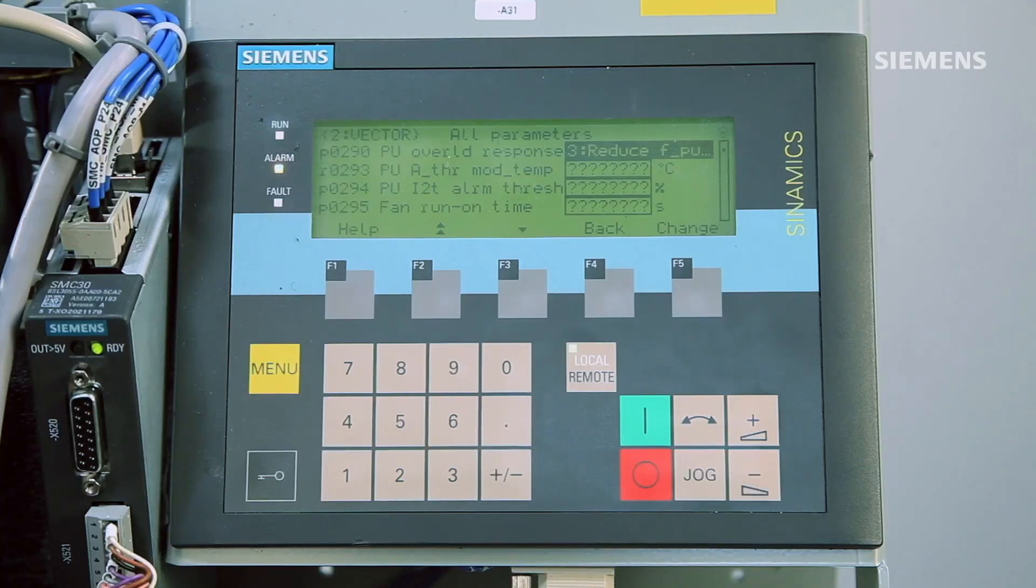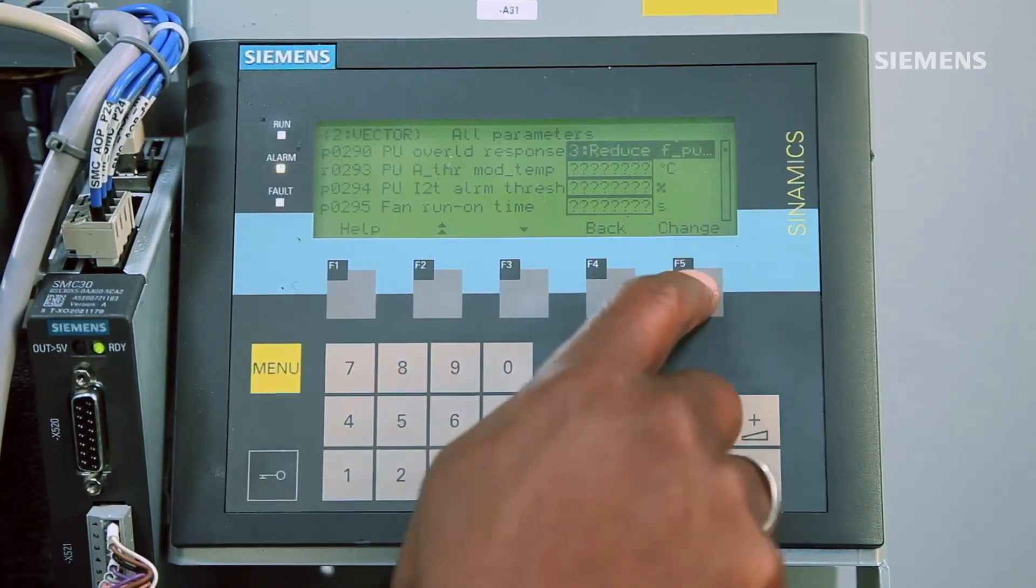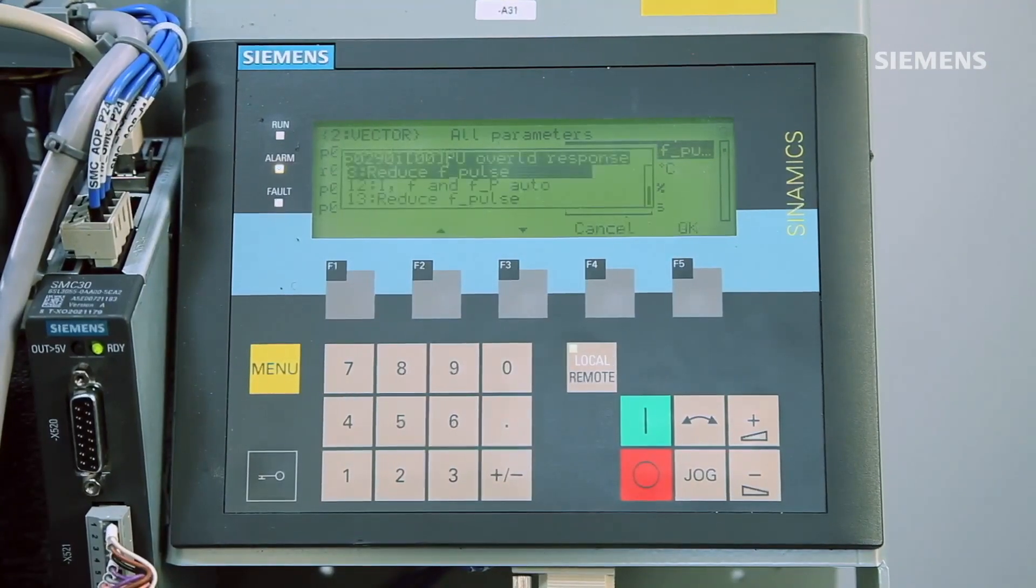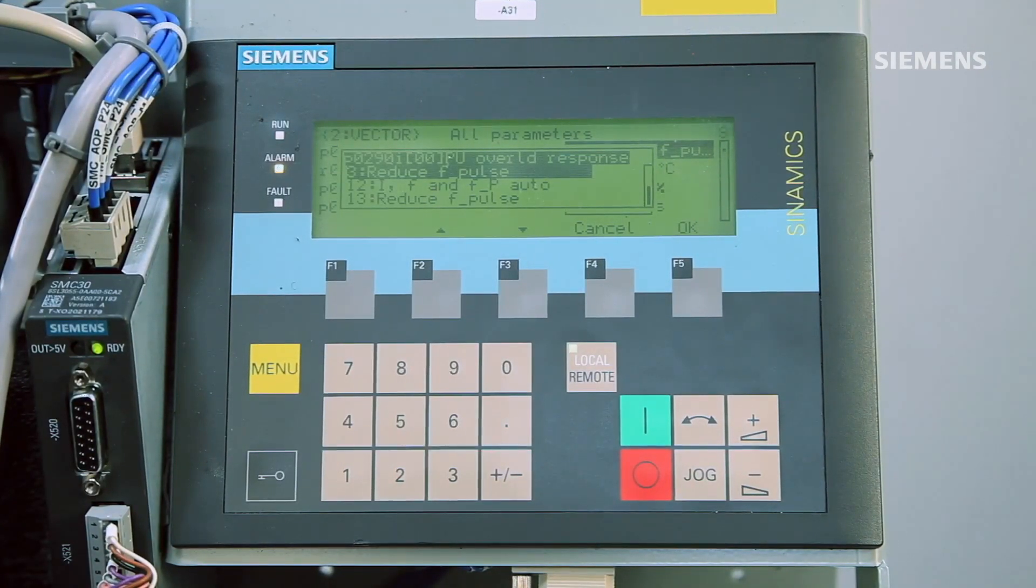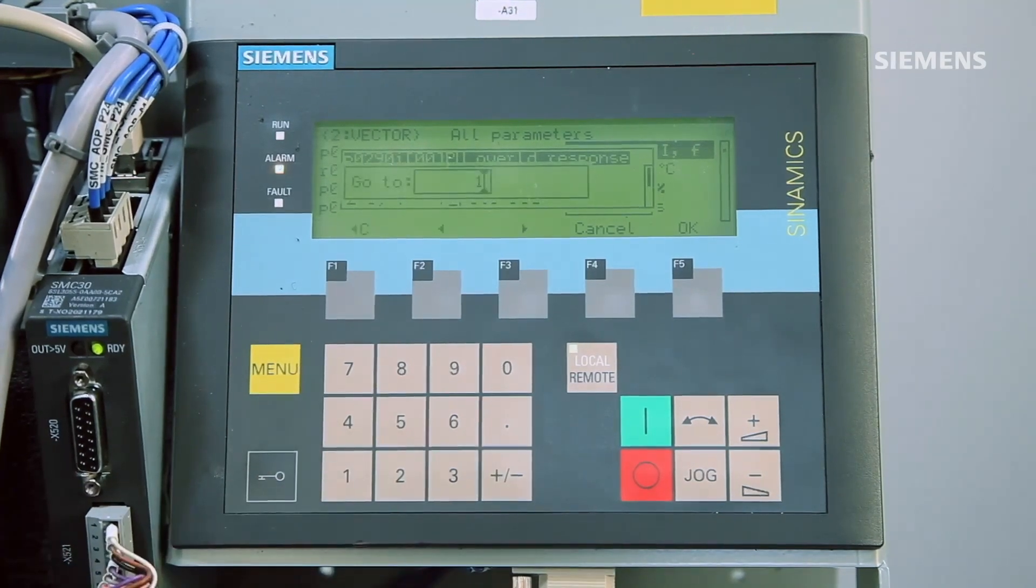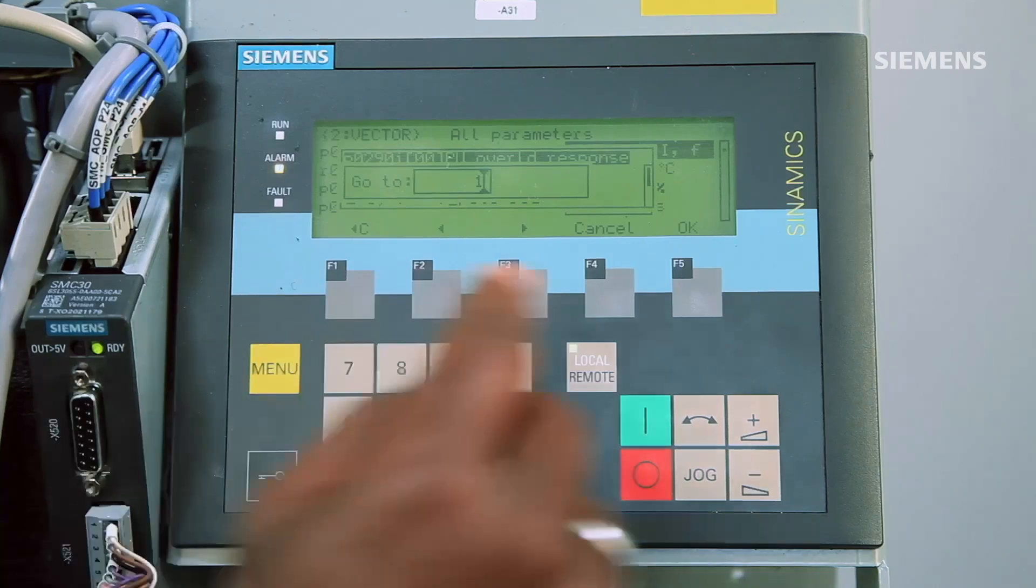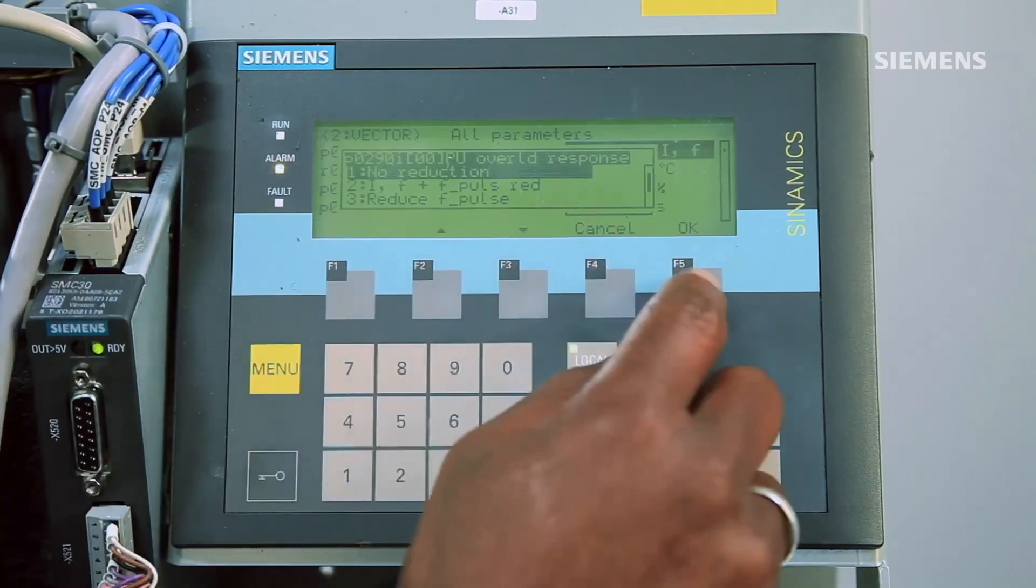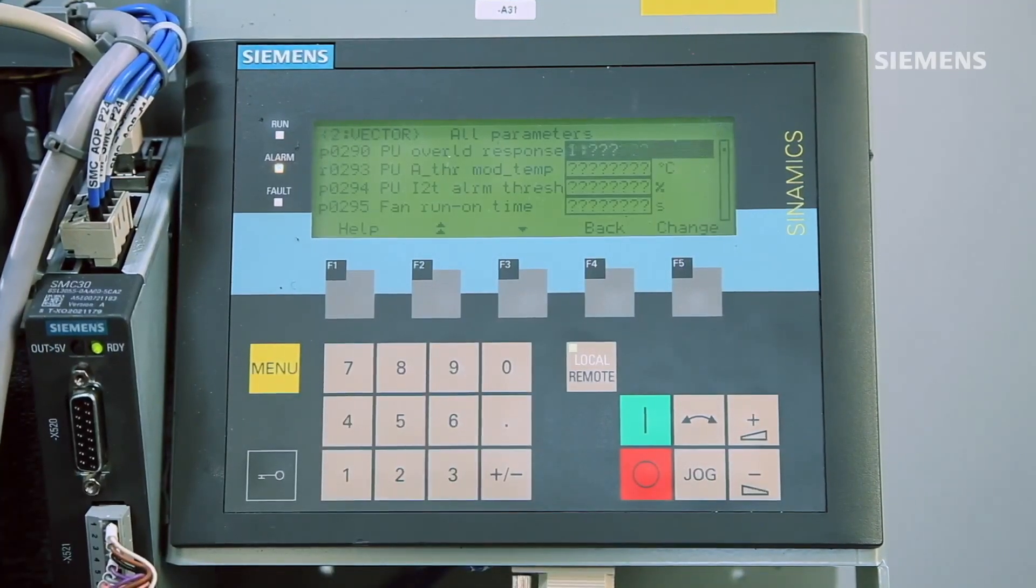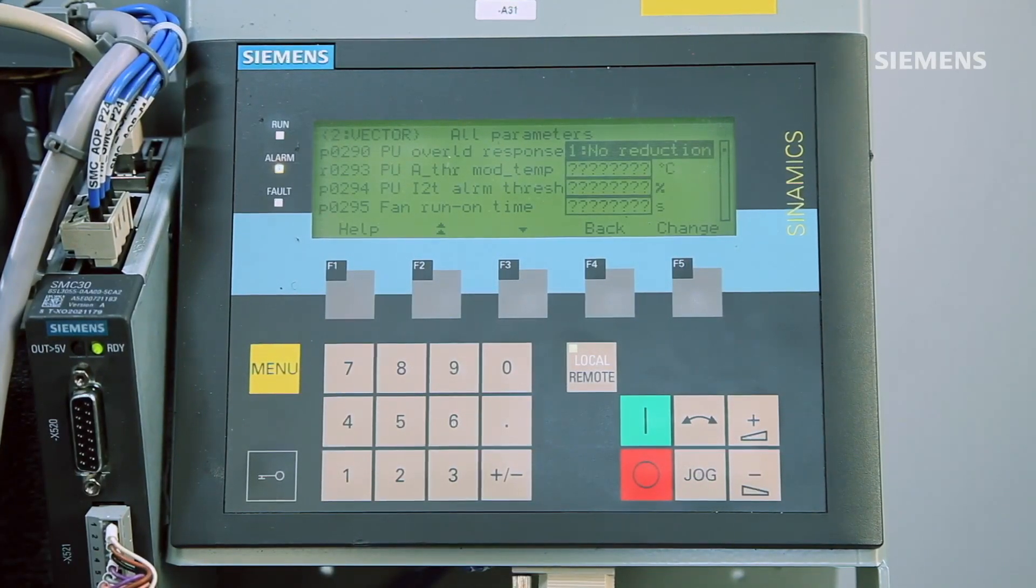Once you type in 290, it will highlight the options available. Hit the change button to select from the possible settings. The drive will respond differently depending on which setting you pick. If parameter 290 is set to 1, no thermal overload avoidance action will be taken. Instead, the drive will be permitted to overheat until a fault occurs and then the drive will shut down to prevent damage.